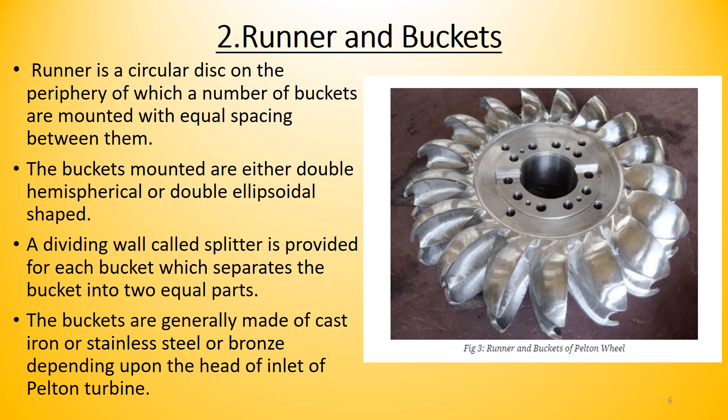The runner is circular in shape, on the periphery of which a number of buckets are mounted with equal spacing. Buckets are usually mounted in a double hemispherical or double ellipsoidal shape. A dividing wall called a splitter is provided for each bucket, separating it into two halves — giving two compartments inside each bucket. The buckets are generally made of cast iron, stainless steel, or bronze, depending on the head at the inlet of the turbine.